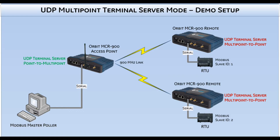The packet will reach both Orbit remotes because they will be configured in multipoint mode. Depending on the slave ID that the Modbus master requests, only one of the RTUs will respond. Once the RTU responds, serial data will now be present on the Orbit remote COM1 port, where it will create a new UDP packet and send it to the point device configured in the terminal server. This point device will be the access point. Now that we have a plan, let's configure the system.